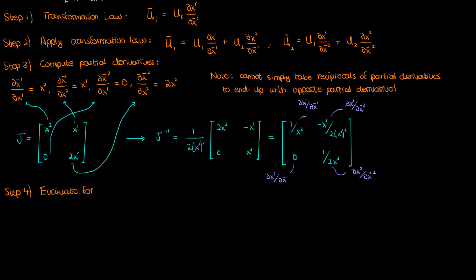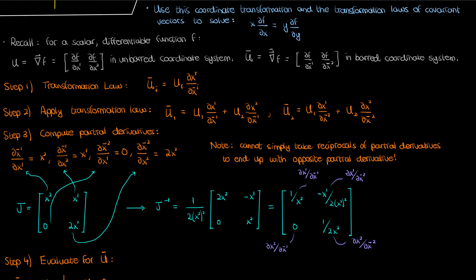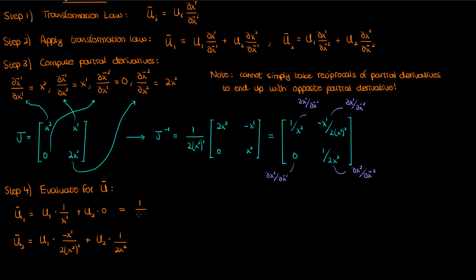Using these partial derivatives that I found, I can finally evaluate u bar. If we plug in our u sub 1 and u sub 2 components, this is what we end up with as our final answers for the barred components of the gradient vector in this new coordinate transformation — the gradient vector components in the new coordinate system expressed in terms of the old coordinate system.